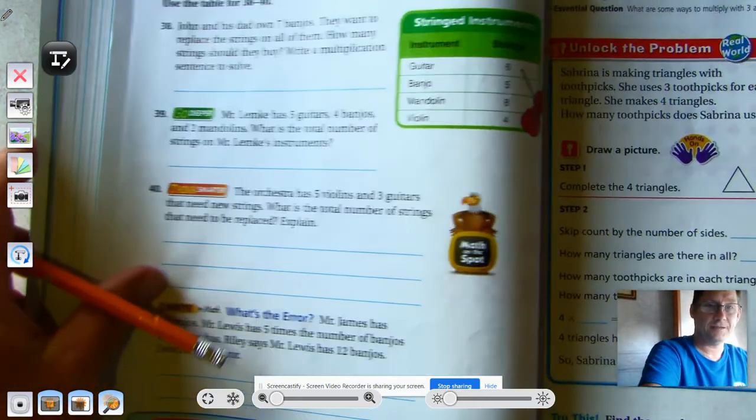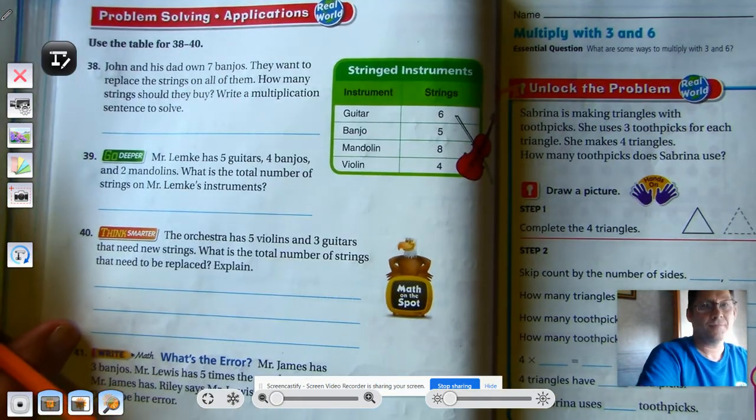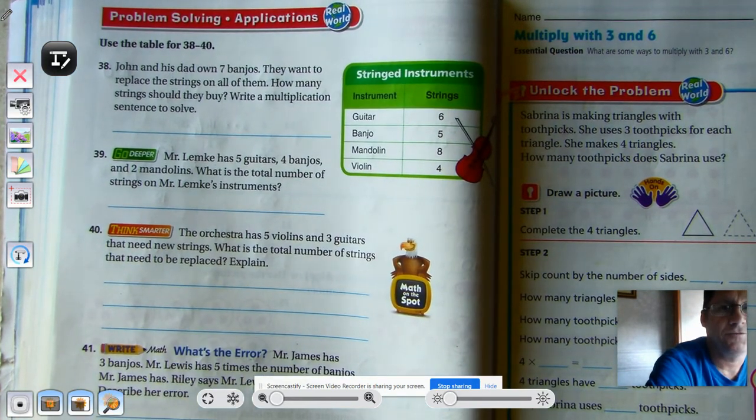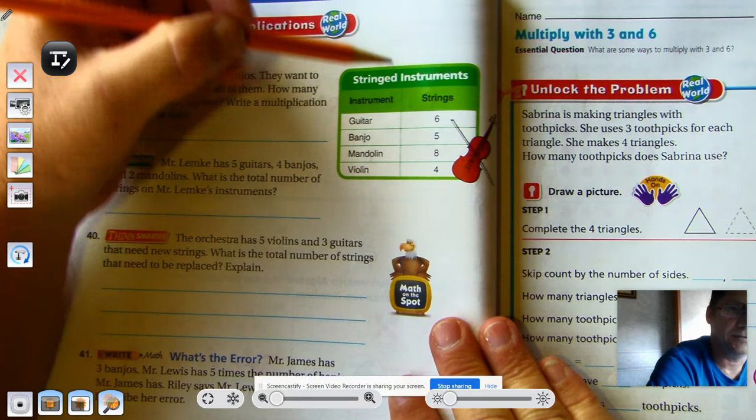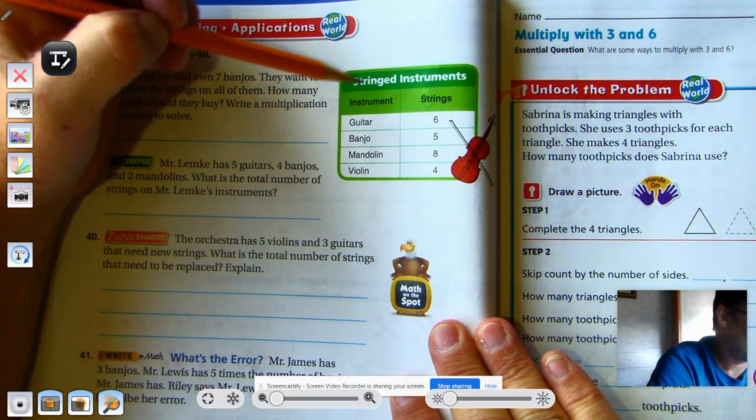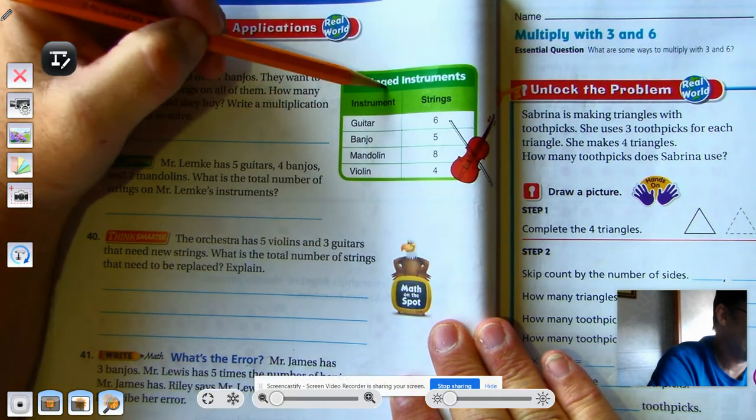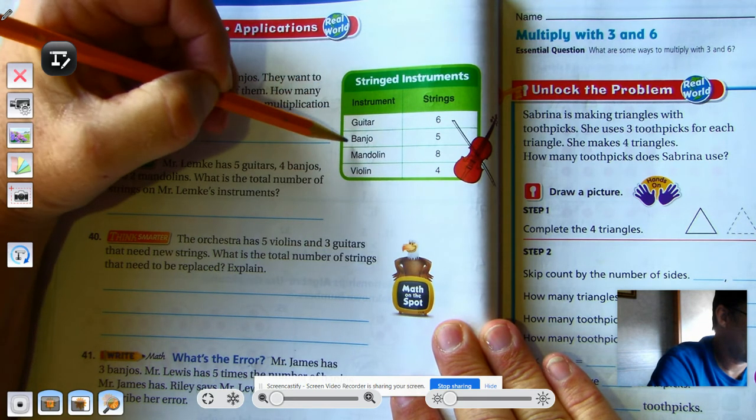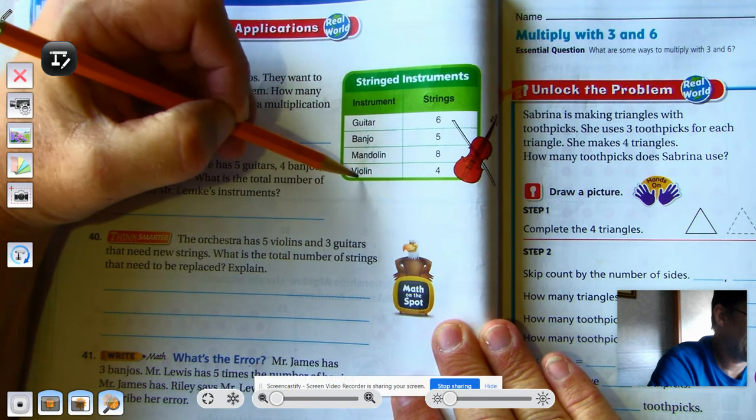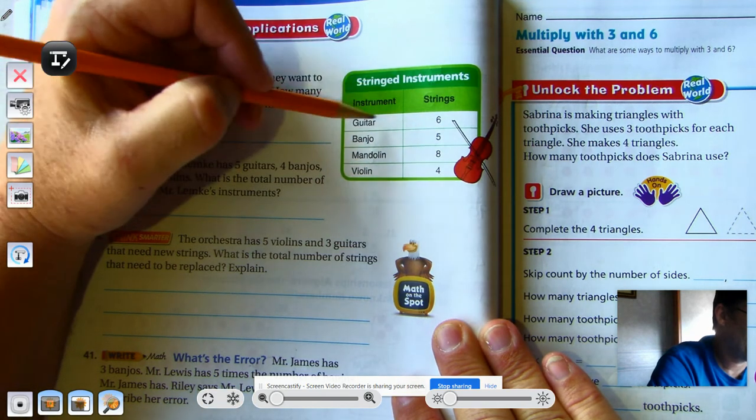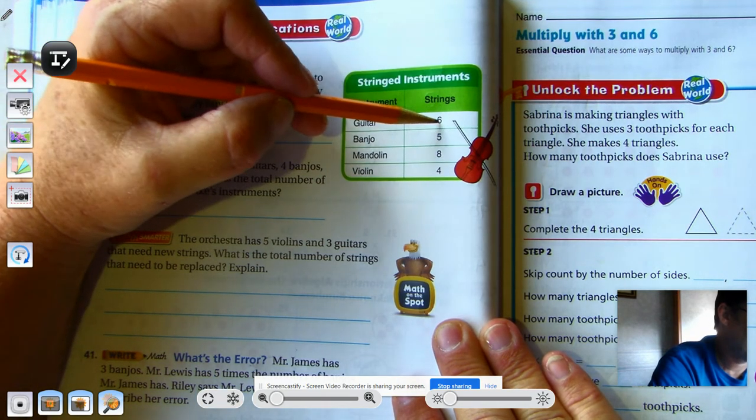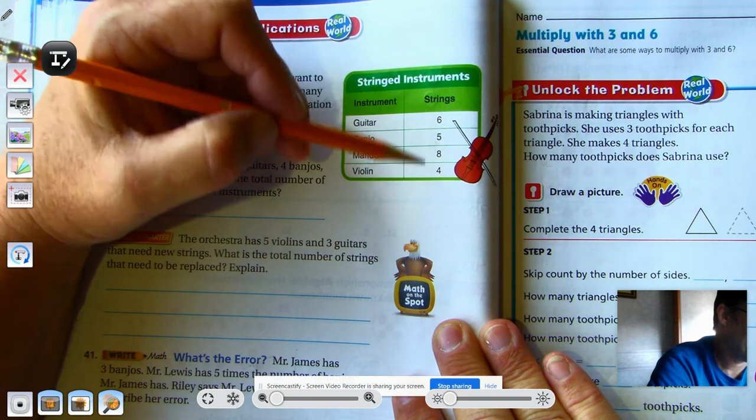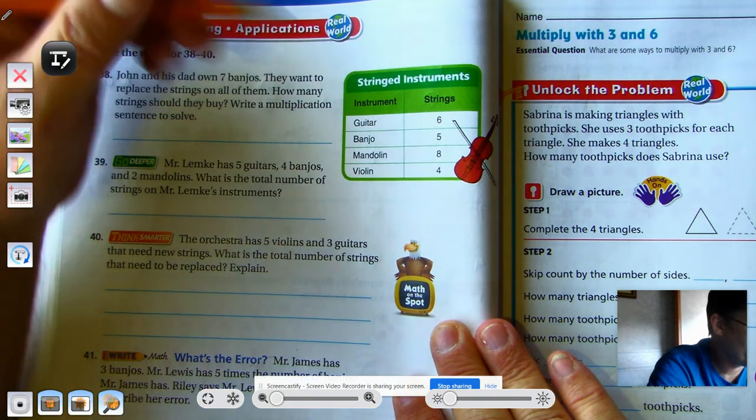Okay, page 146, number 38. Use the table for 38 through 40. So, let's look at our table. Our title is stringed instruments. We have 4 instruments. A guitar, a banjo, a mandolin, and a violin. And the number of strings on those instruments. The guitar has 6 strings. The banjo has 5 strings. The mandolin has 8 strings. And the violin has 4 strings.